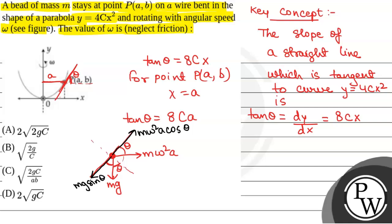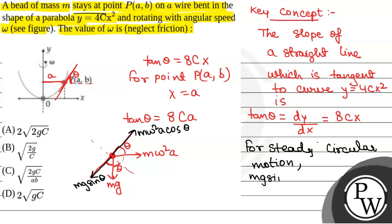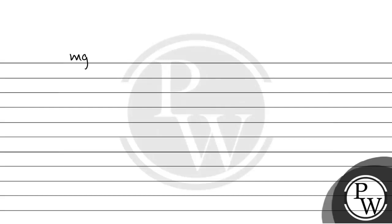Now, as the bead is in steady circular motion, for steady circular motion we will have: Mg sinθ = MΩ²A cosθ.